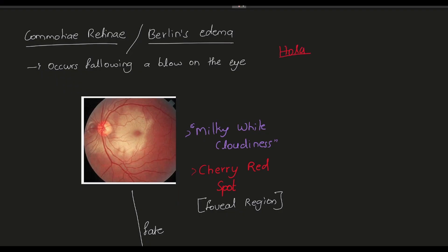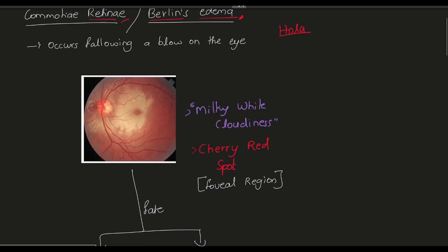Hola medicos, this is Cosmic Medico here. I will discuss commotio retinae, also known as Berlin's edema. As you can see the words retina and edema, there is edema over the retina in this condition, and it usually occurs following a blow on the eye that may be due to various causes.